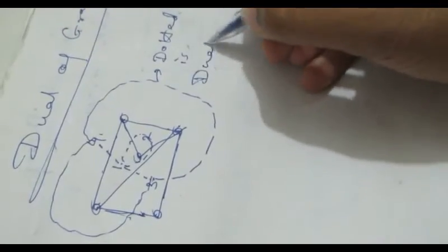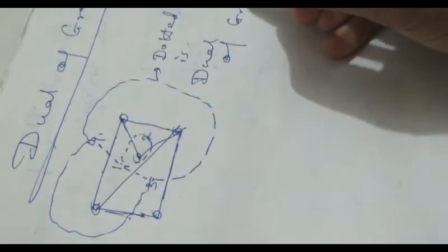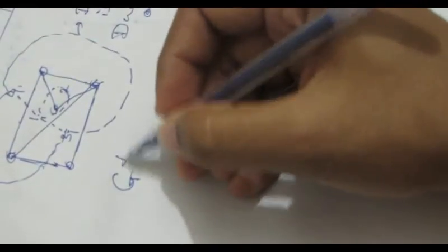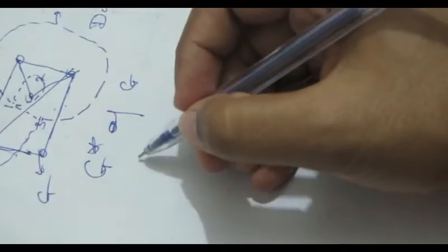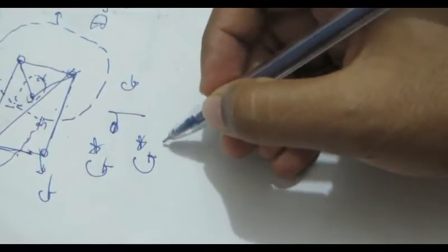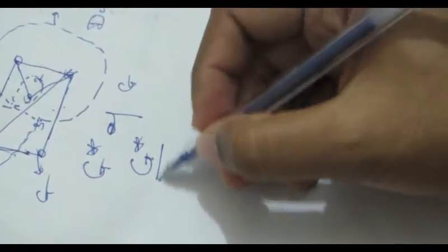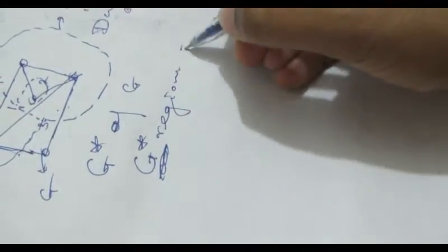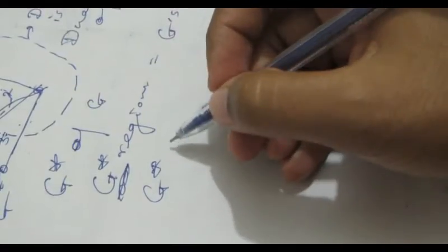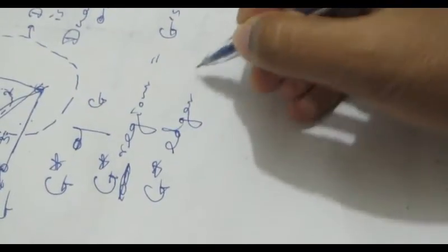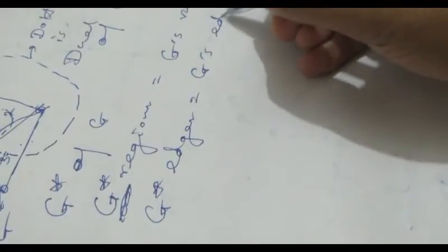In this way you will get a graph, and the dotted lines form the dual of the graph. It is denoted by G-star of G. If the original was G, this will be G-star. Remember: G-star's number of regions equals G's number of vertices, and G-star's edges equals G's edges, and vice versa.